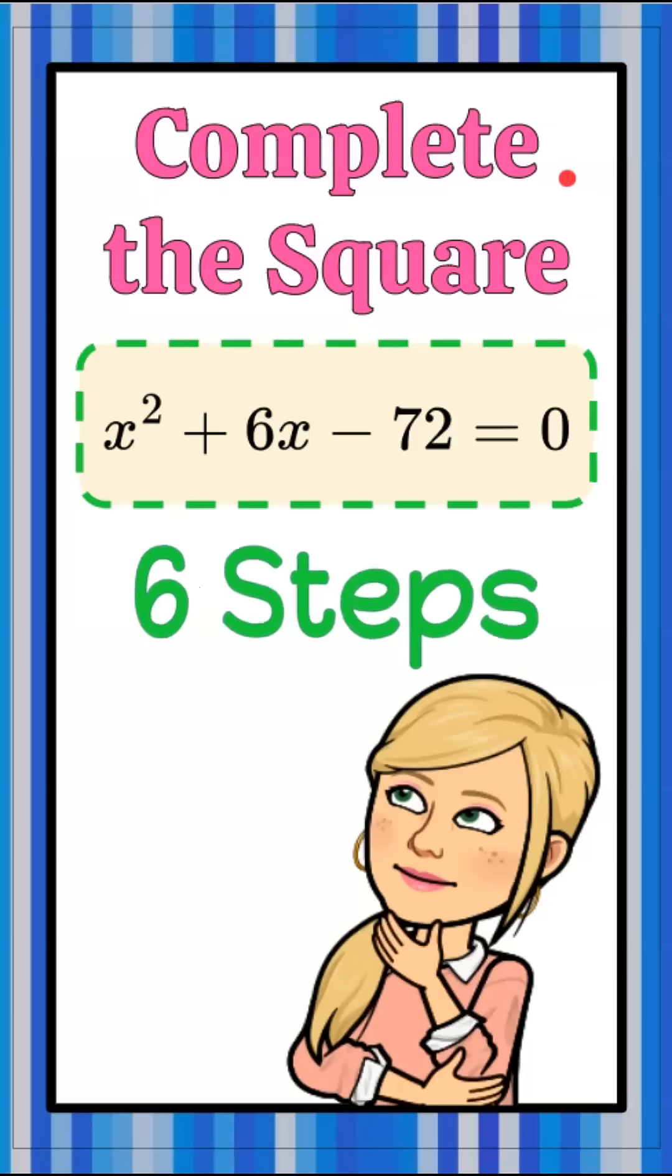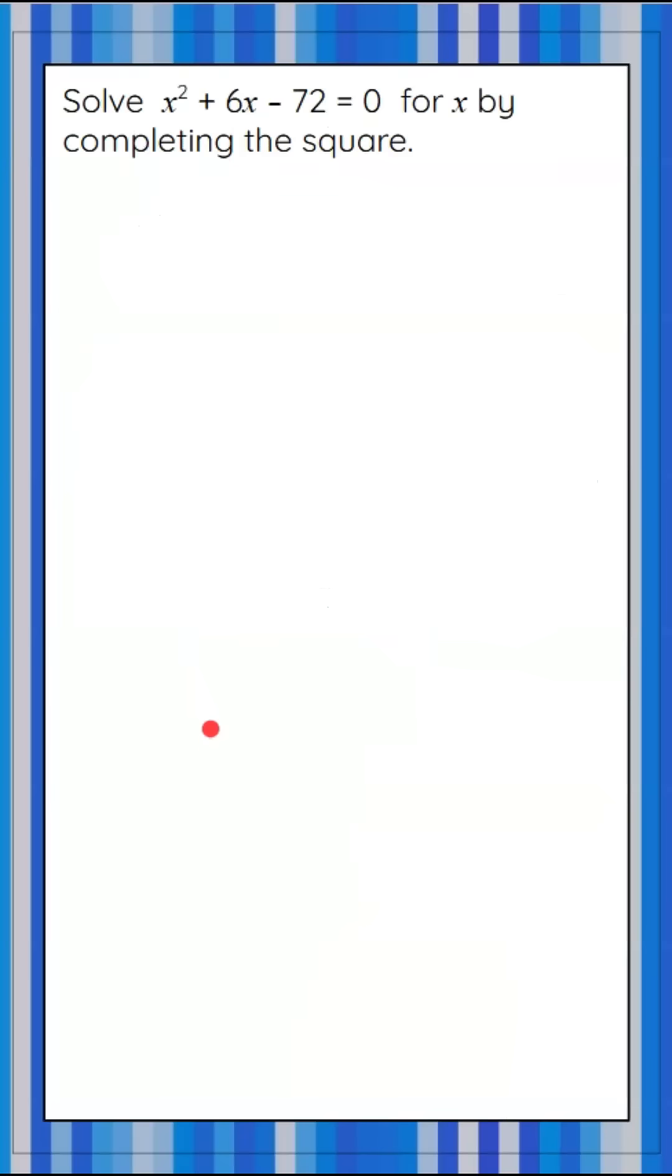It's the Magic of Math here, and today we're going to complete the square of this quadratic equation in six simple steps. We're asked to solve x squared add 6x subtract 72 equals 0 for x by completing the square.